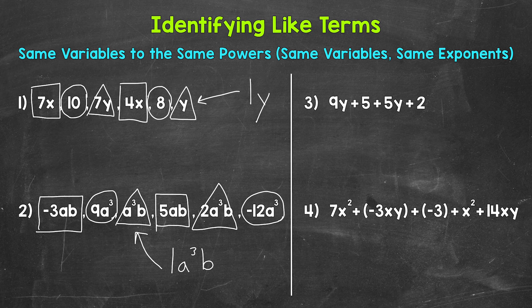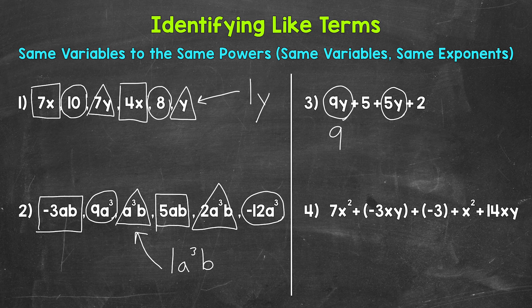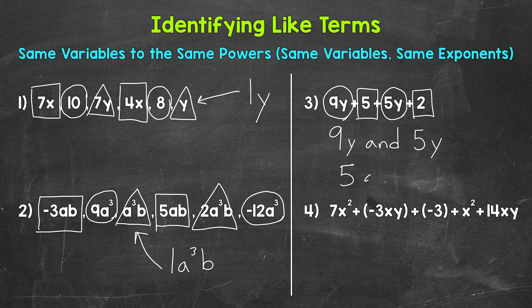Let's move on to numbers 3 and 4 where we will identify like terms within algebraic expressions. Starting with number 3: 9y + 5 + 5y + 2. Are there any like terms? Yes. 9y and 5y both have that variable of y to the power of 1, so they are like terms. We also have two constant terms, 5 and 2 — let's box those in. 5 and 2 are like terms. So we have two pairs of like terms within that algebraic expression.